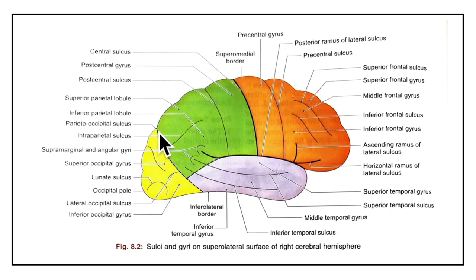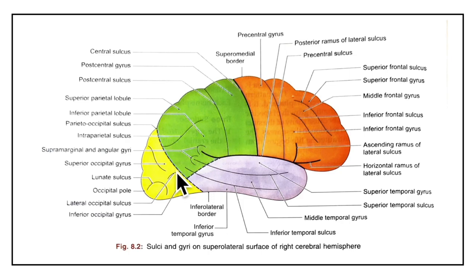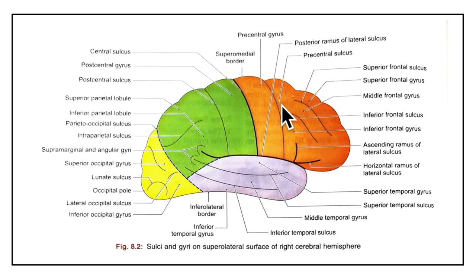Next is the parieto-occipital sulcus, which is a sulcus of the medial surface. Its upper end cuts the supramedial border about 5 cm in front of the occipital pole. The pre-occipital notch is an indentation on the infralateral border about 5 cm in front of the occipital pole. The divisions of the lobes are completed by drawing a line joining the parieto-occipital sulcus to the pre-occipital notch, and another line continuing backwards from the posterior ramus of the lateral sulcus to meet the first imaginary line — giving us the frontal, parietal, occipital and temporal lobes.